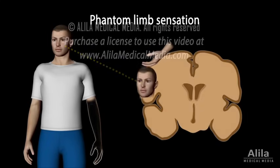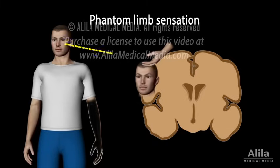Because incoming sensory signals from the arms and face project to neighboring regions in the somatosensory cortex, it is plausible that sensory inputs from the face spill over to the now inactive arm region that no longer receives any inputs, tricking the brain's higher centers into interpreting that the sensation comes from the absent arm.